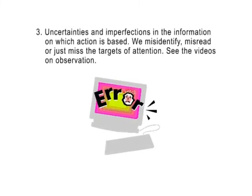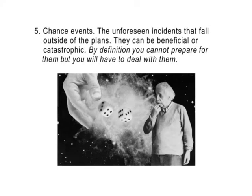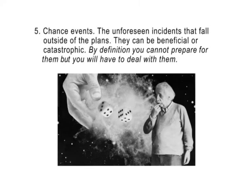Third is the timely quality and quantity of information that we get from the environment. We looked at this in the videos on observation. Once you get that timely, high-quality information, you'll have to deal with your own team. Confusion, miscommunication, and so on is more the norm than the exception. Chance events play a continual role in decision making. Their random, unforeseeable nature demands implicit improvisation.